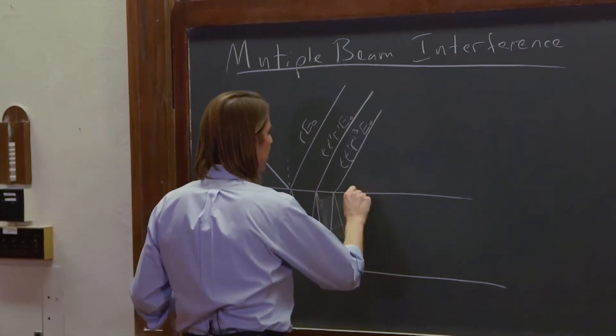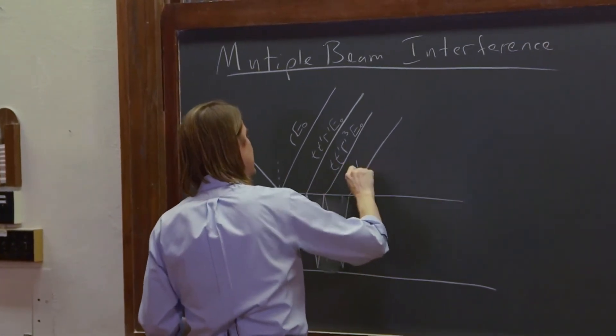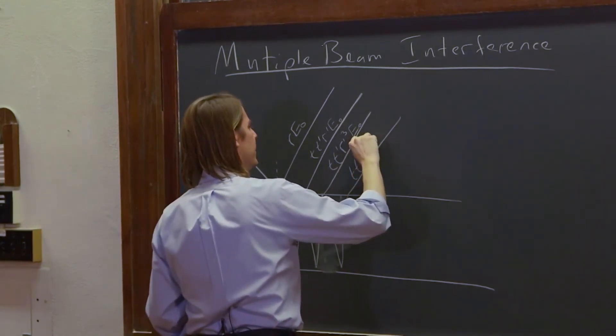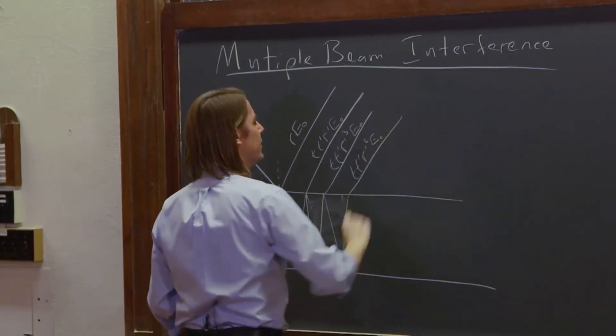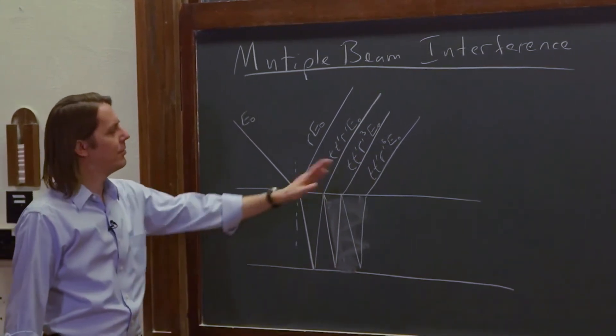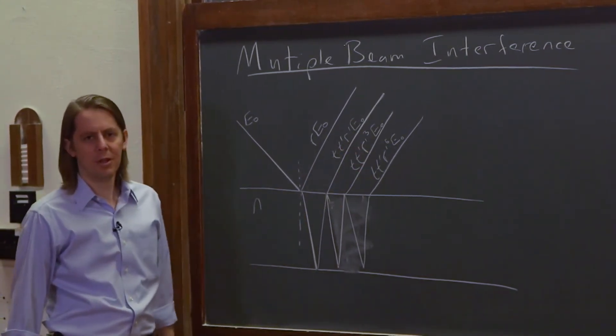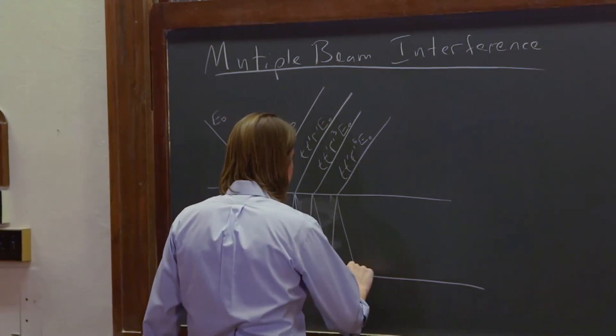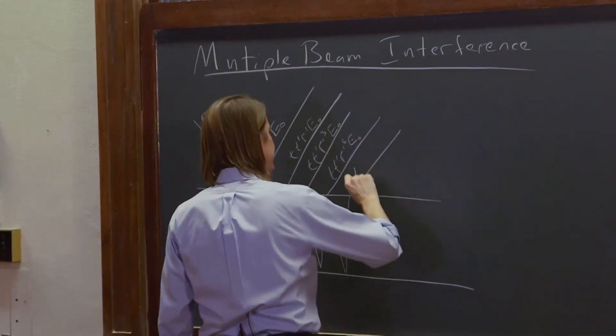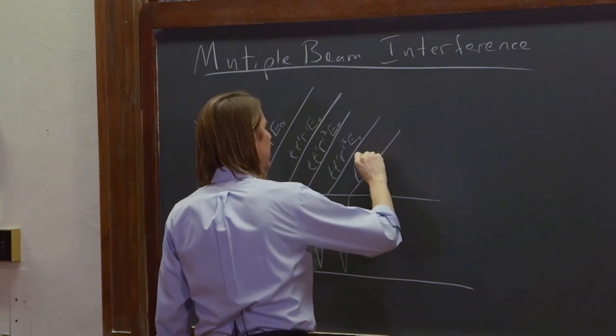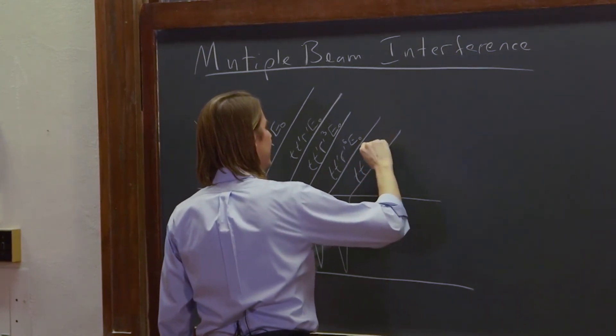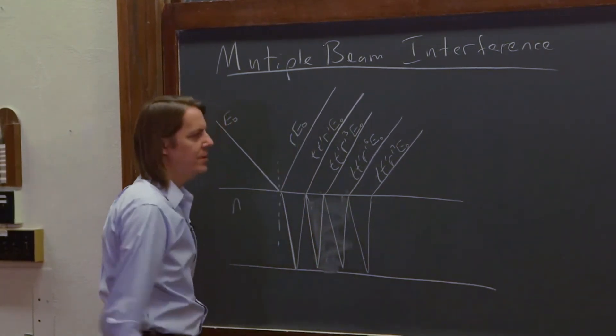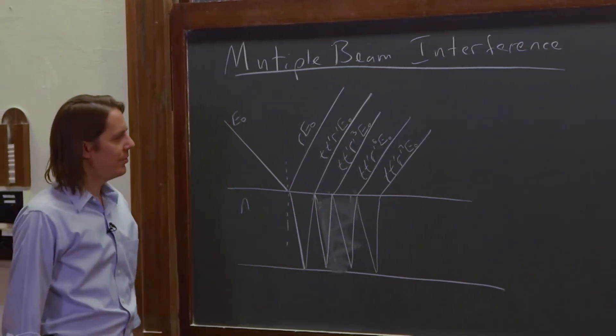This one is small, even smaller. T, T-prime has to go in and out. And this one goes through 5 reflections, R-prime to the 5th, E-naught. 4% to the 5th. I'm sorry, not 4%, 0.2 to the 5th. That's really small. This is 0.2 cubed. And then what about this one? T, T-prime has to go in and out. R-prime to the 7th, E-naught. Is it really the 7th? 1, 2, 3, 4, 5, 6, 7. Yep. T, T-prime, R-prime to the 7th, E-naught.